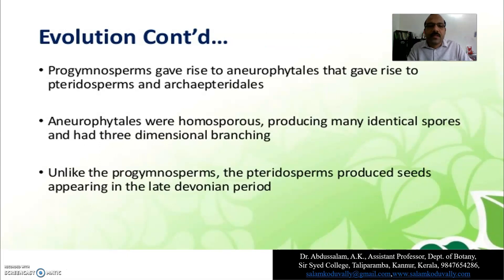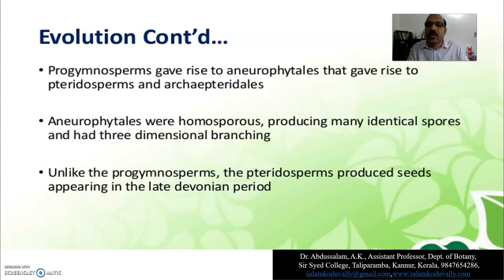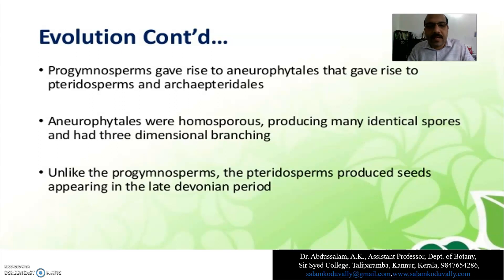Progymnosperms gave rise to aneurophytales, which gave rise to telosperms and archaeopteridales. Aneurophytales were homosporous, producing many identical spores, and had three-dimensional branching.